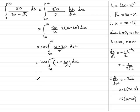So what we have is 100 and then square brackets. The integral of 1 with respect to x is x and the integral of minus 20 over x with respect to x is minus 20 times the natural log of x. And that's going from 20 to 10.